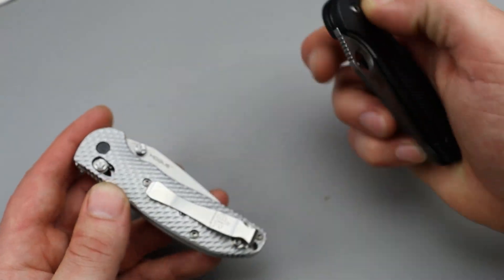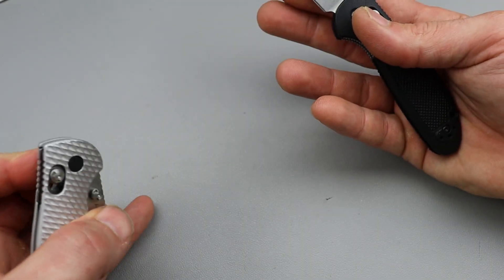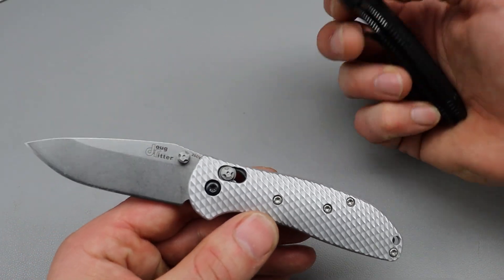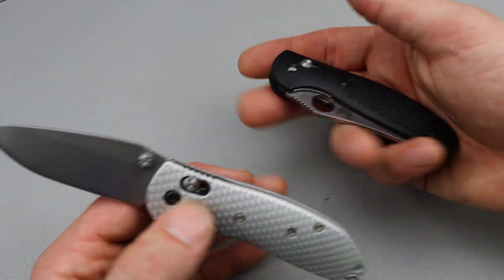The Benchmade Mini Griptilian and the Hogue Ritter RSK Mini. These are probably my all-time favorite compact knives. My most recommended would be the Cubit just because for the price range. But if you got USA knife money.